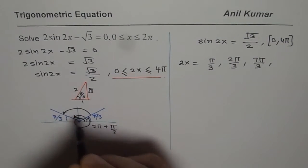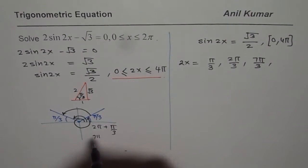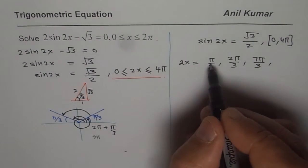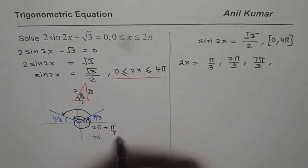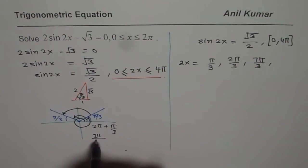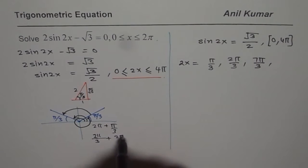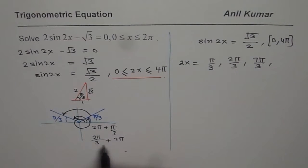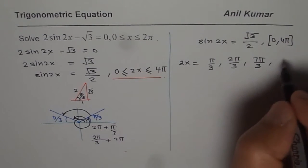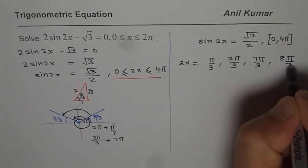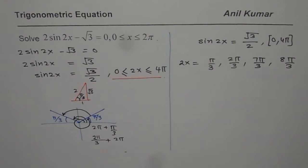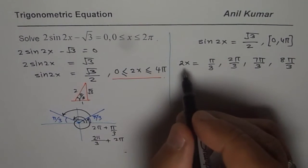So you could have 2π by 3 plus 2π. When you do that, 3 times 2 is 6, 6 plus 2 is 8, so we get 8π by 3. So these are the four solutions which you get for 2x.